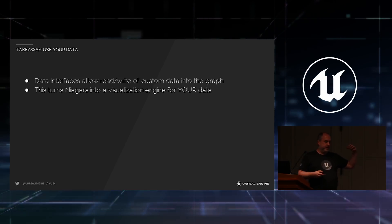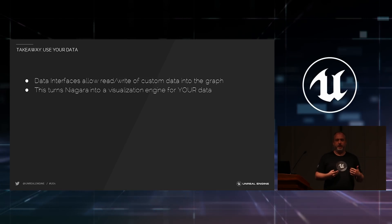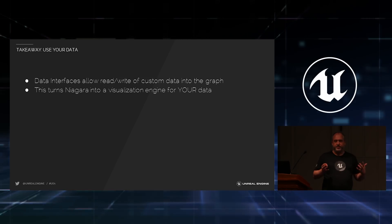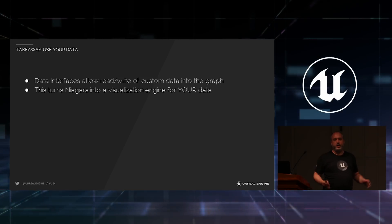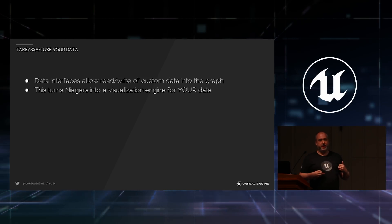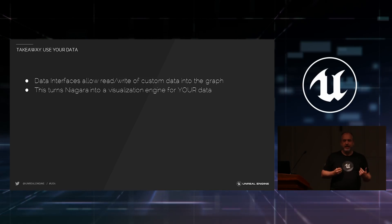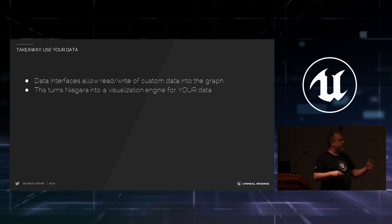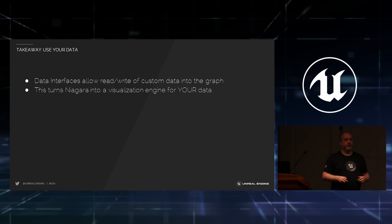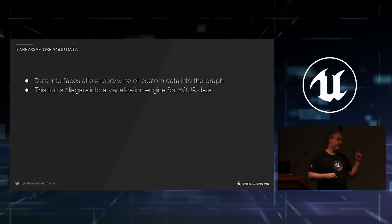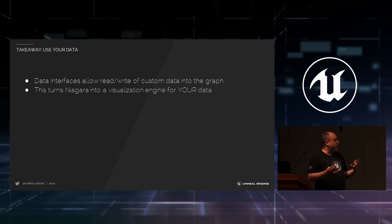The next thing to talk about is data interfaces and getting your data into Niagara. Unreal previously had no great way of visualizing lots of data points — Cascade is really hard to get data into. Say you're working in photogrammetry with a giant point cloud you want to visualize, or you have an interesting physics simulation you want to render beautifully — let's get that into Niagara. We have C++ classes called data interfaces that allow you to read and write custom data into the graph, exposing custom functions that work with that particular data. We use this for curves, skeletal mesh interaction, and potentially audio data.